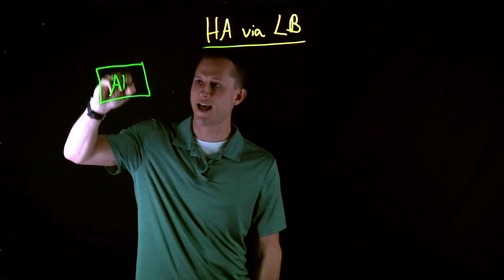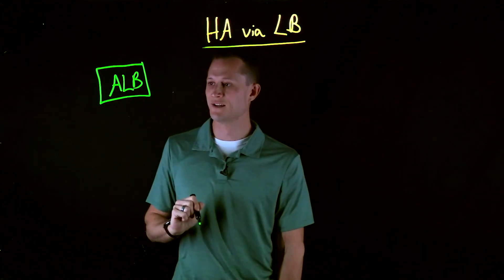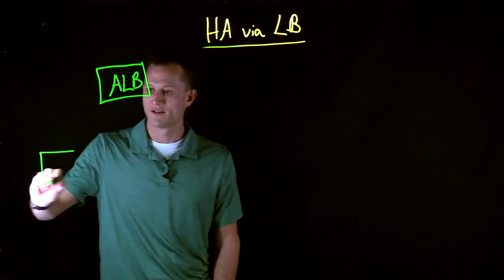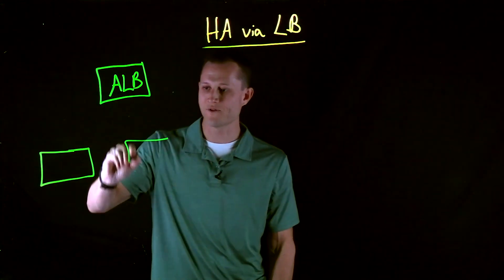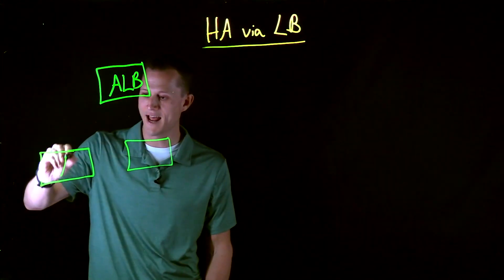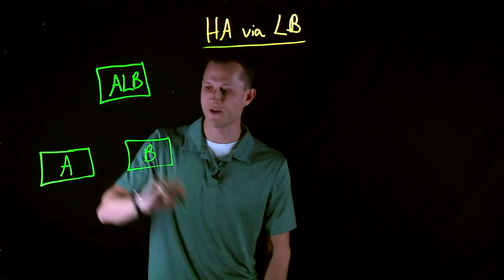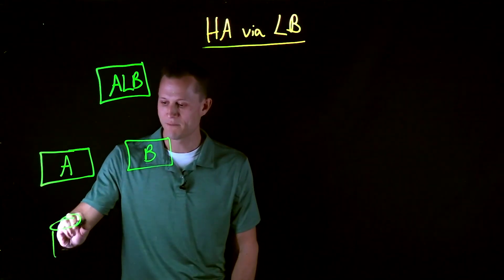First, we need an Azure LB. We also need two F5 units. This is BIG-IP unit A and BIG-IP unit B. I'll put some back-end servers.